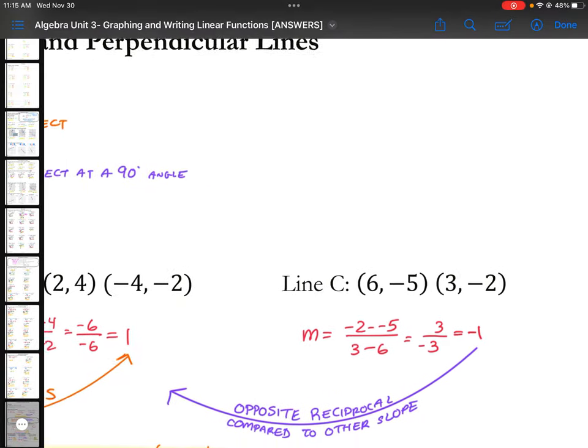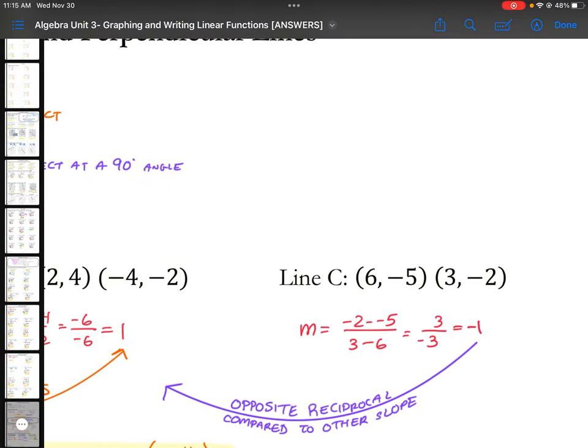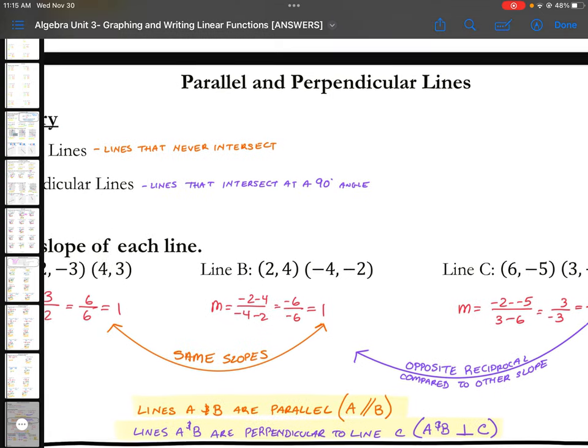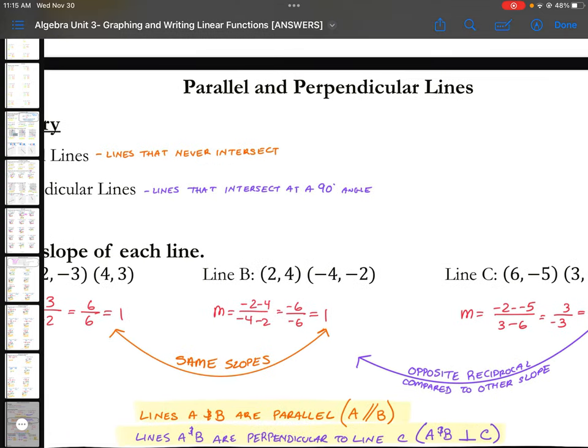However, line C. Line C is a negative one. That's the opposite reciprocal compared to the other slope. So what we can say is that lines A and B are parallel. You can use this notation where it's A and then the two slanted lines for parallel B.